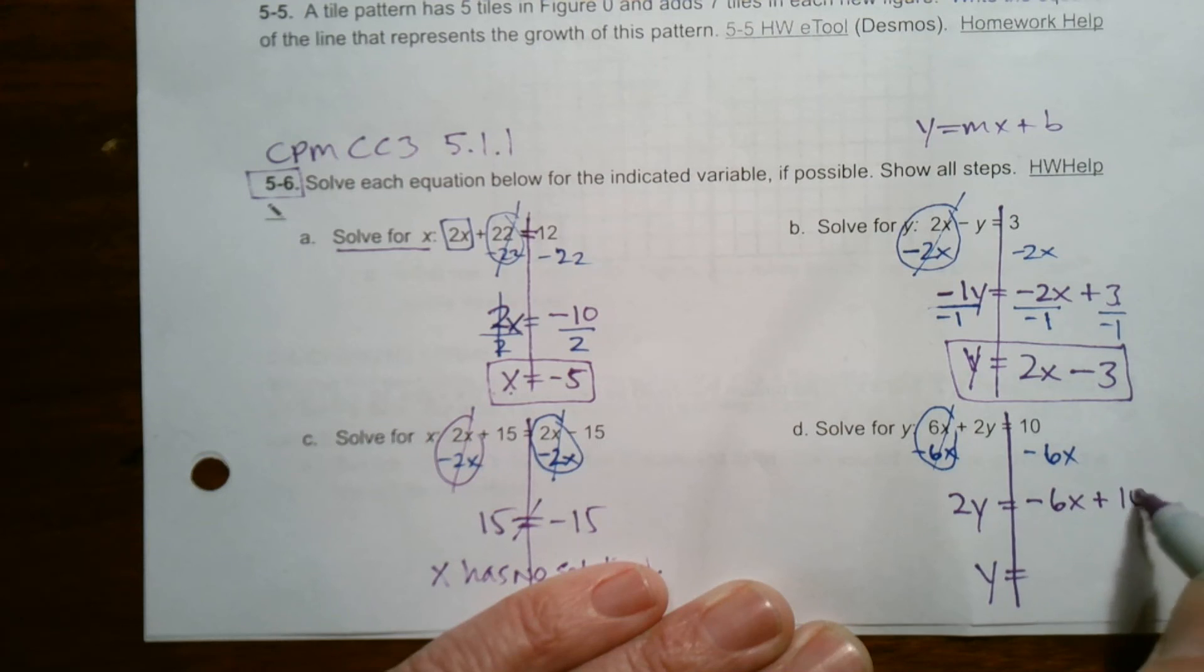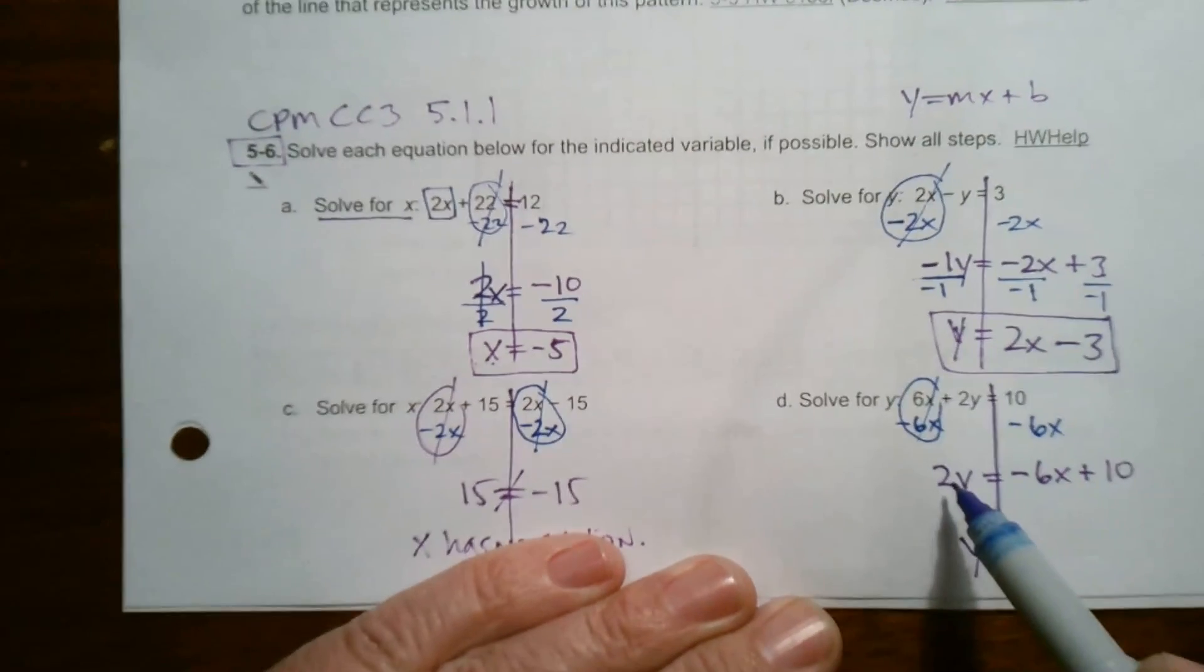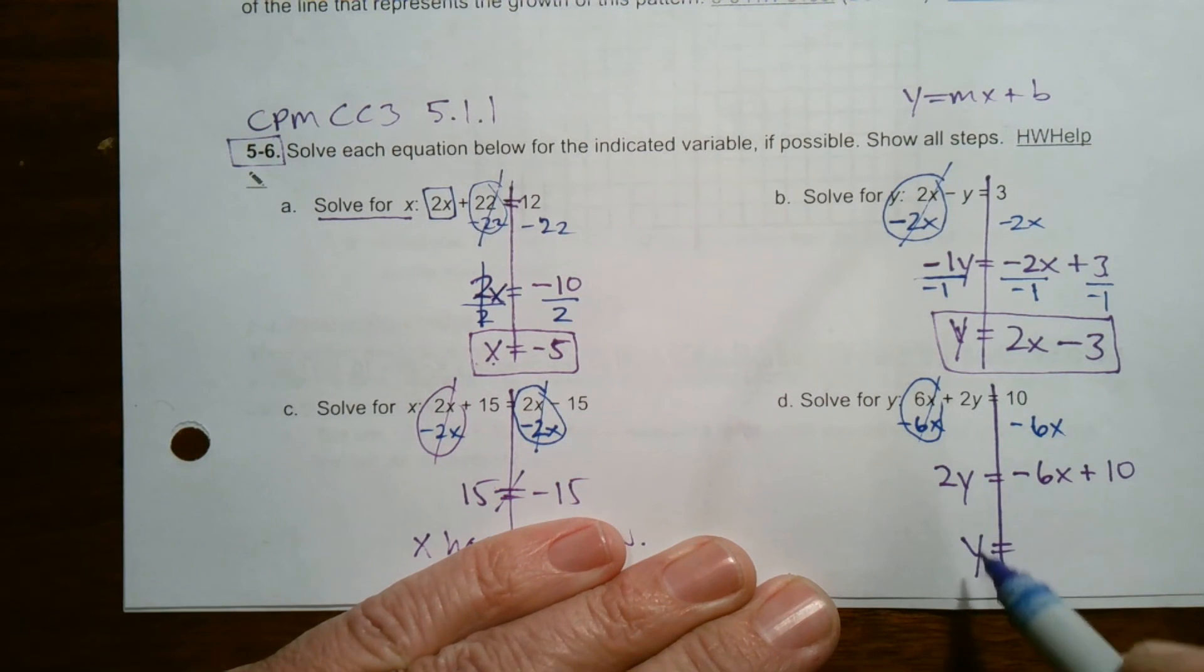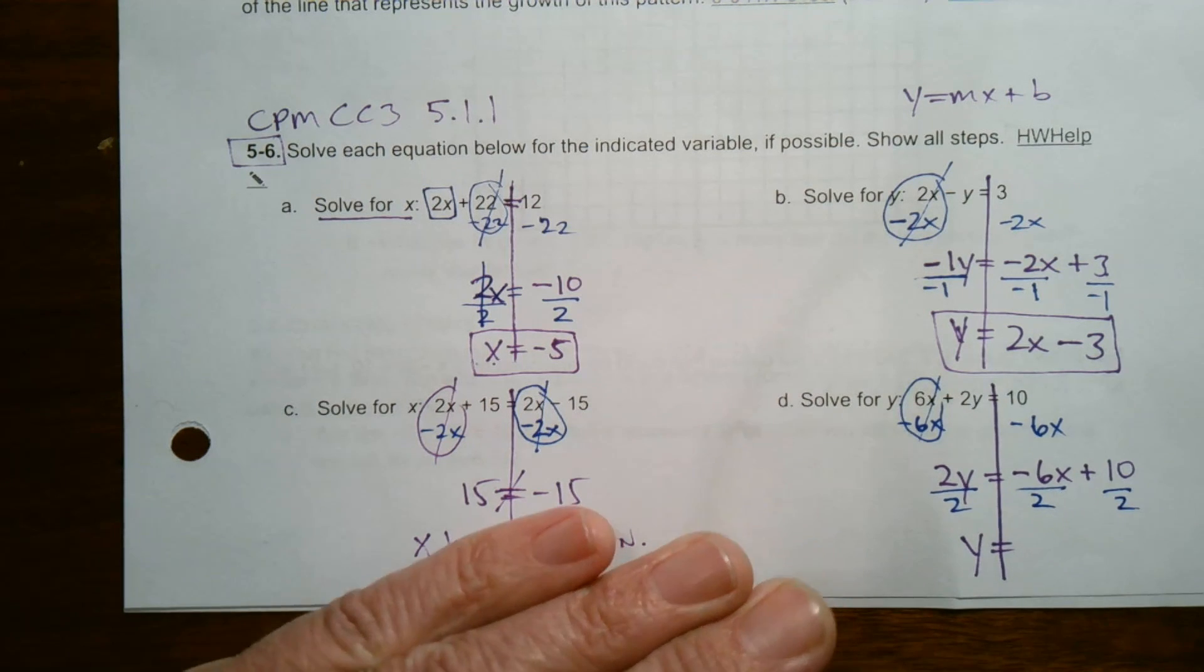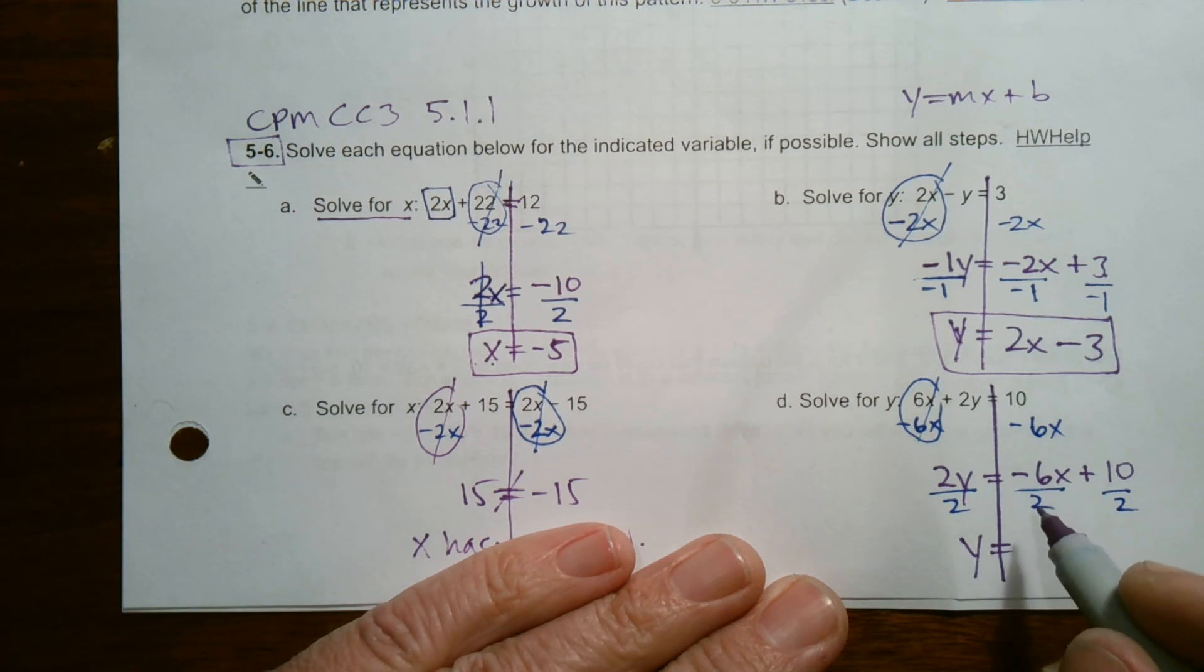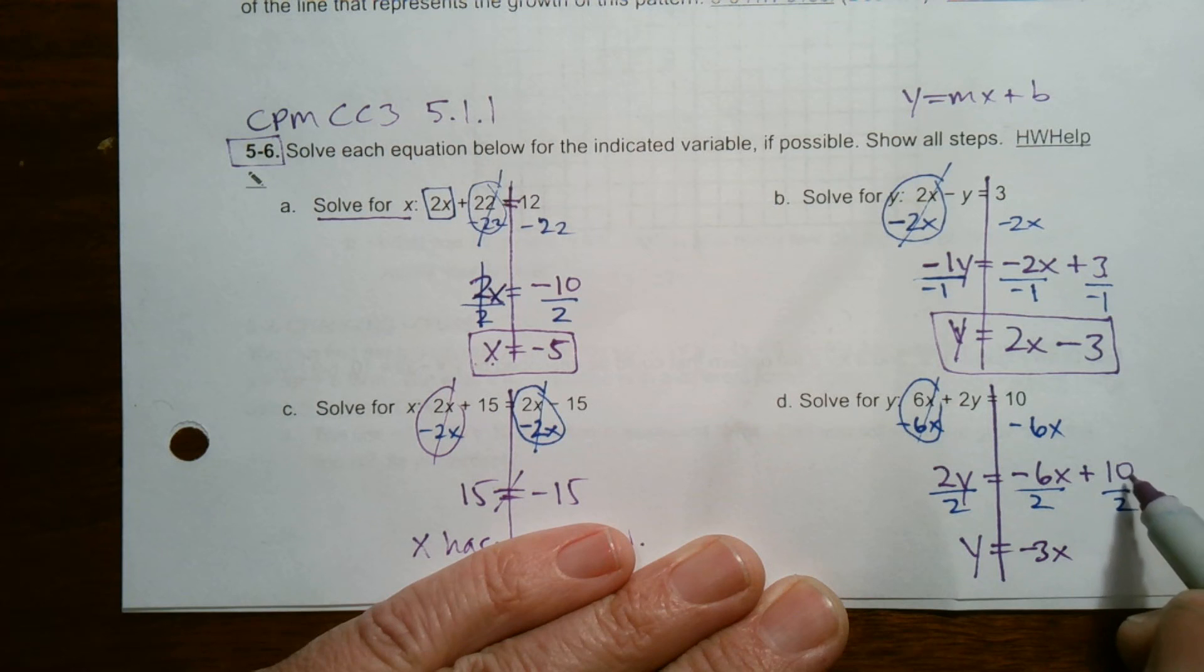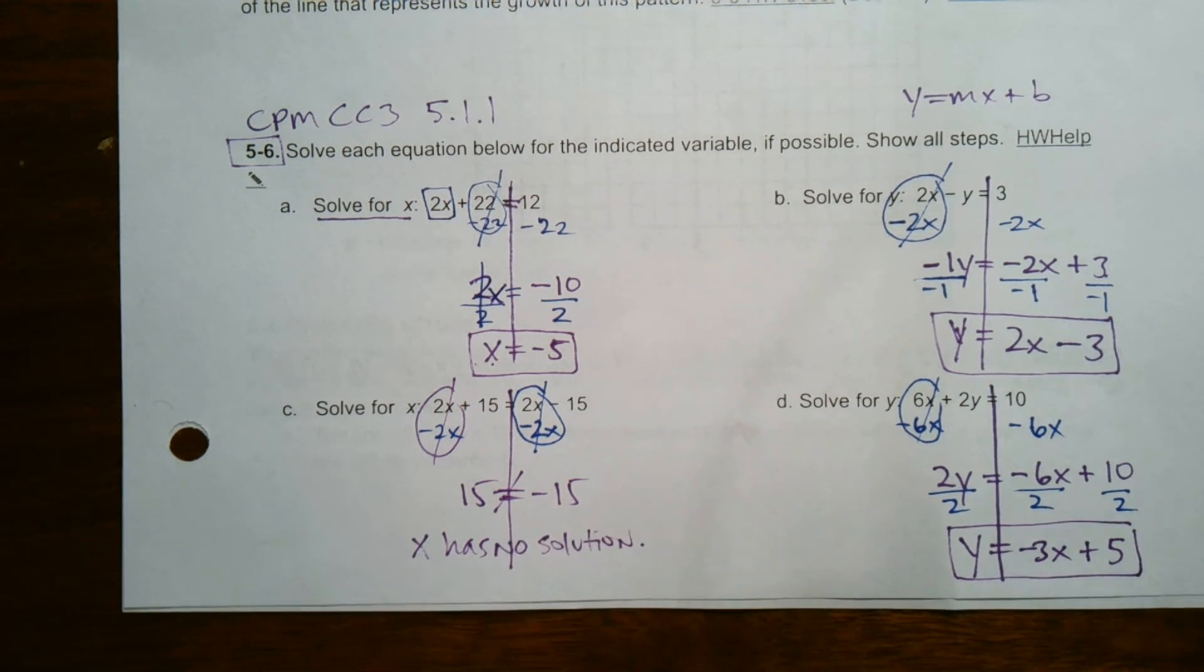Still need my y completely alone. I have a 2y. I need it to be a 1y. So I divide by 2. And remember what you do to one side of the equation, you do to the other, and you do it to each of the terms. Divide by 2 to each of them. So negative 6 divided by 2 is negative 3x. And then 10 divided by 2 is 5. So my final answer here would be y equals negative 3x plus 5. Okay. There we go.